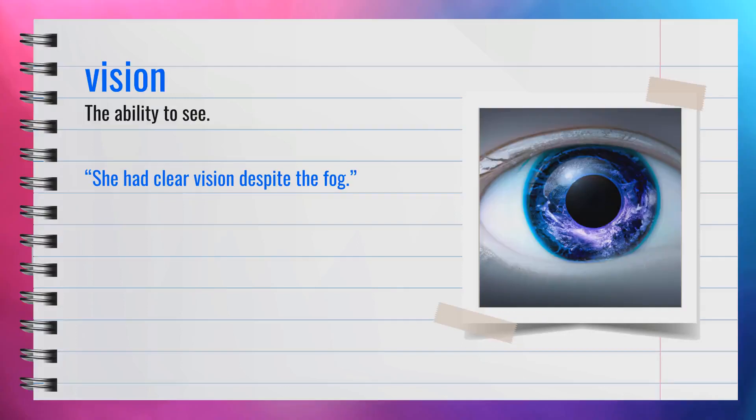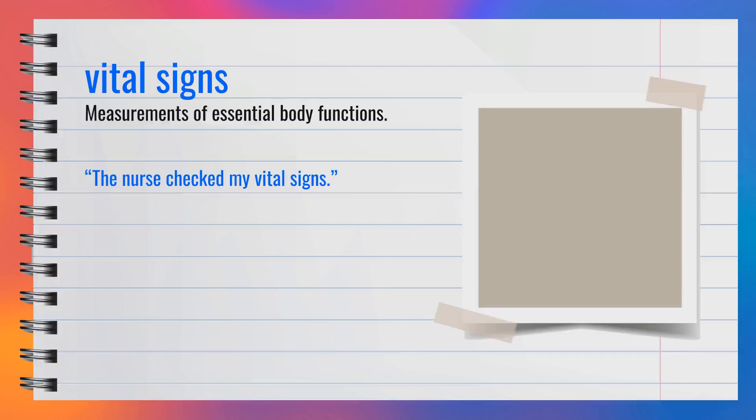The word vision, spelled V-I-S-I-O-N, is a noun. It refers to the ability to see. A synonym for vision is eyesight. For example, she had clear vision despite the fog. In summary, vision means the ability to see.